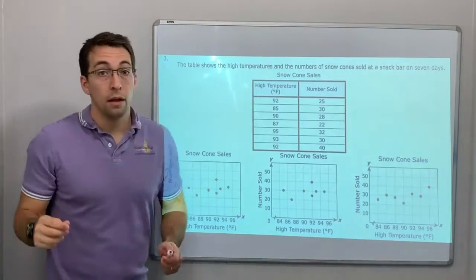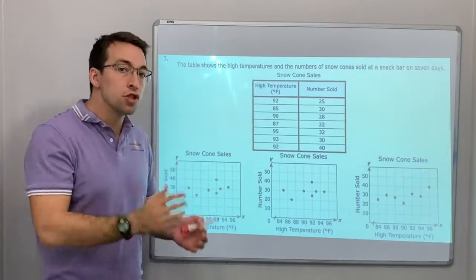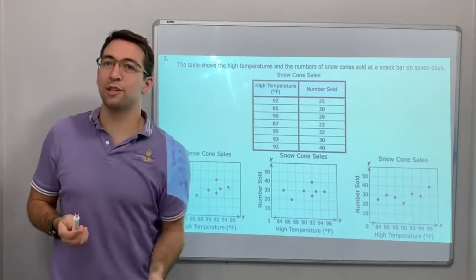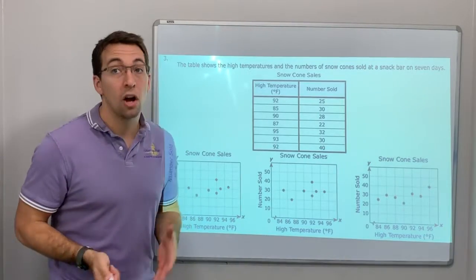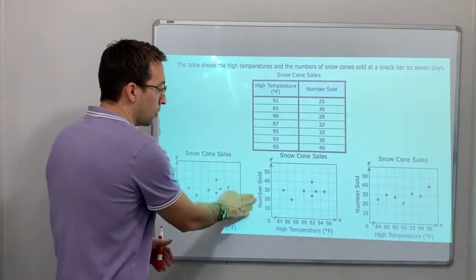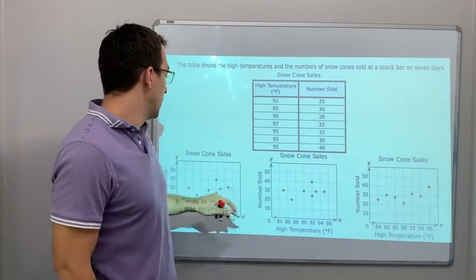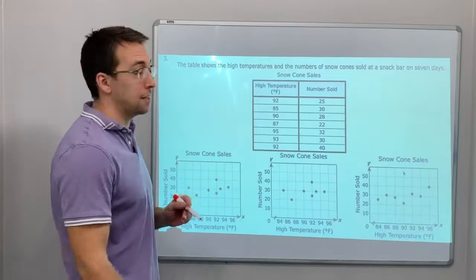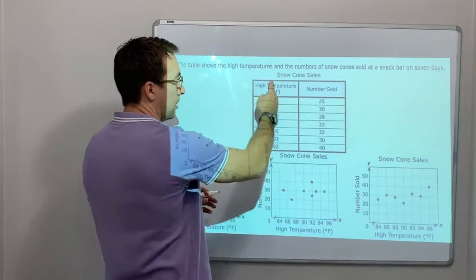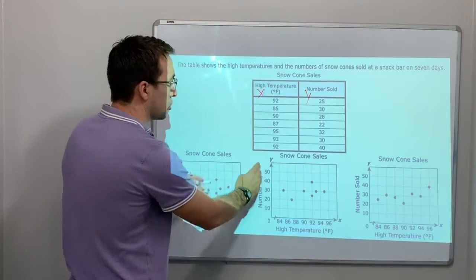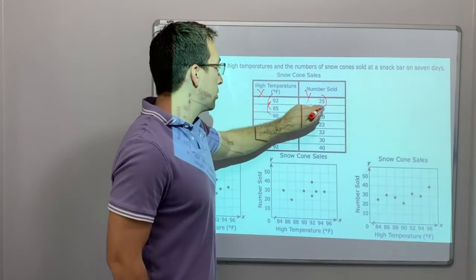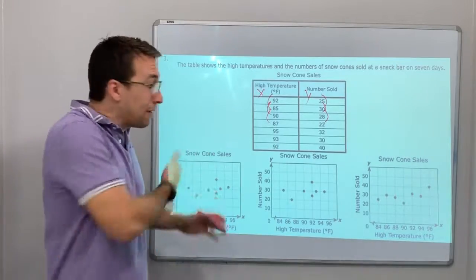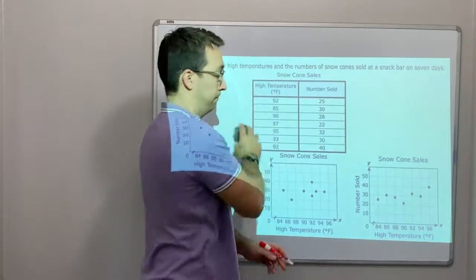The table shows the high temperature and the numbers of snow cones. I think this makes sense, right? The hotter, the more snow cones. We'll find out. This table shows the high temperatures and the number of snow cones sold at a snack bar on 7 days. Numbers sold and the temperature. So there's 7 points, right? 1, 2, 3, 4, 5, 6, 7. Makes sense. So there's 7 points and each point is comparing the temperature x value. So here's our x value and here's our y value. Numbers sold. So these are coordinates. These are graphing coordinates. So 92. So we just have to graph it. Let's just graph it all and see which one is accurate.